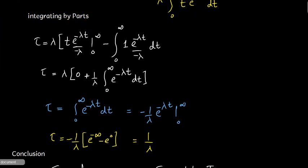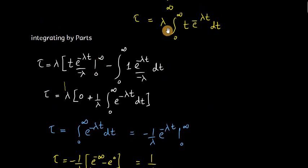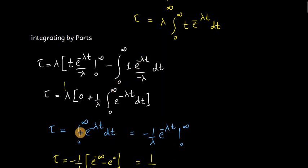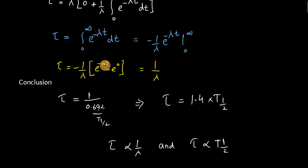Integrating by parts, taking t as the first function and e^(−λt) as the second function, we obtain: tau equals λ times [t·(e^(−λt)/(−λ)) from 0 to infinity, minus the integral from 0 to infinity of (1)·(e^(−λt)/(−λ))·dt]. The first term approaches zero when we apply the limits. The double minus gives us (1/λ) times the integral from 0 to infinity of e^(−λt)·dt, which upon integration gives tau equals 1/λ.